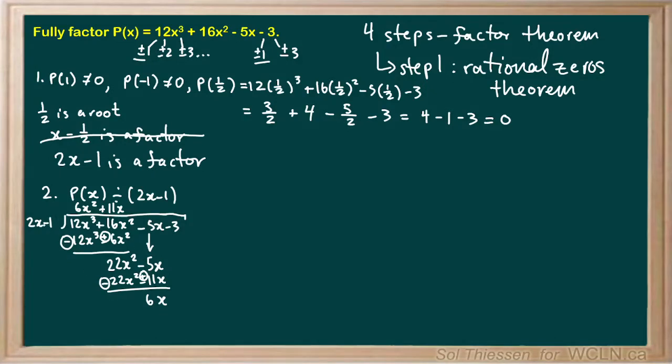Now we ask, what do we multiply 2x by in order to get 6x? The answer is positive 3. So we have 2x minus 1 times positive 3. 3 times 2x gives us 6x. I forgot to bring down this minus 3 from before, so I'll do that now. Then I have 3 times negative 1, which gives me negative 3. We're going to subtract here, and 6x minus 6x gives us 0. Negative 3 plus 3 gives us 0. Our remainder is 0, and our quotient is 6x squared plus 11x plus 3.